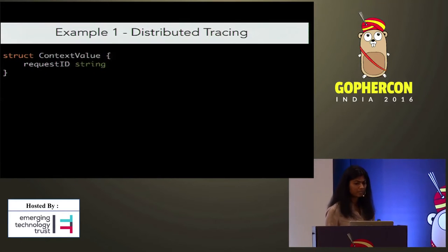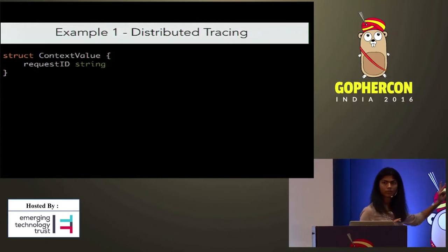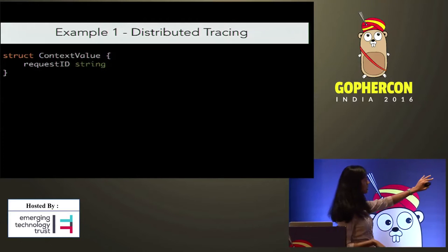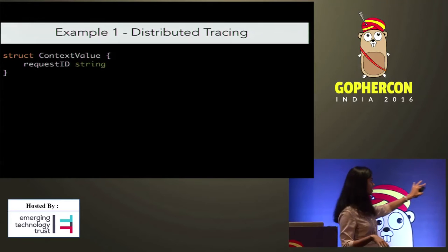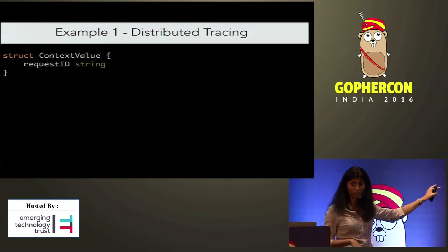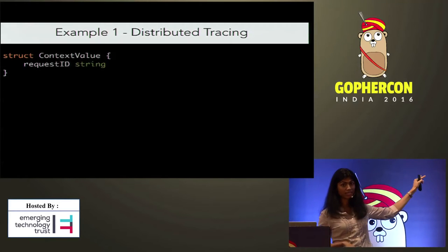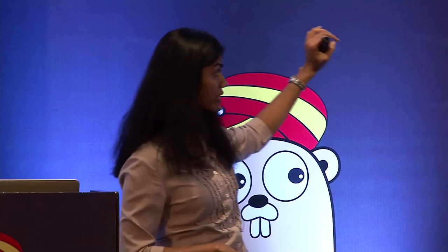A possible context value for distributed tracing could be a request ID — a unique request identifier. For example, we've used UUIDs, 128-bit unique identifiers, as the context value, which will uniquely identify the flow across the system.